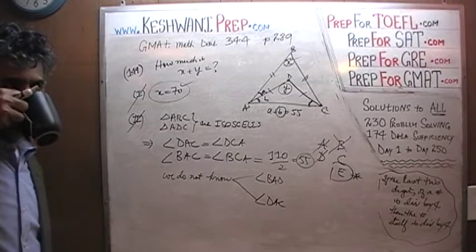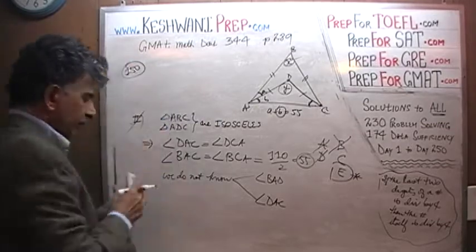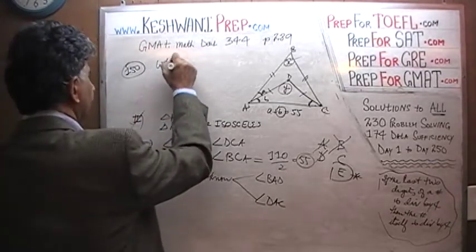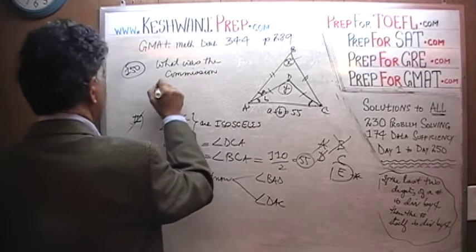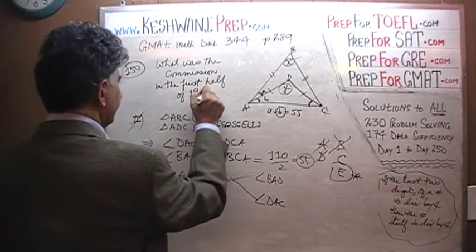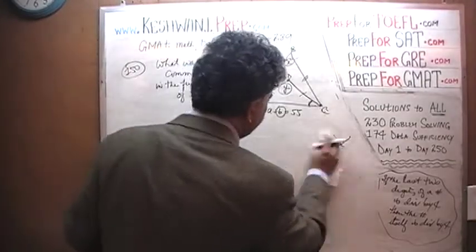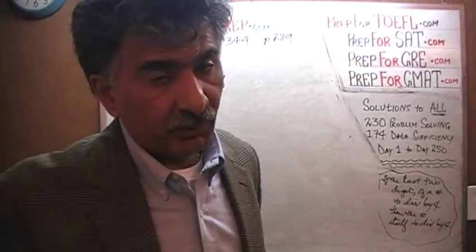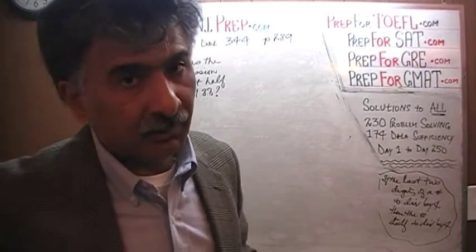Let's go to the next question — number 150. The question asks: what was the commission in the first half of 1988? If one statement tells us the commission for the whole year, and the second tells us the commission in the second half of the year, we could figure out the first half by subtraction. But let's see if we're that lucky.